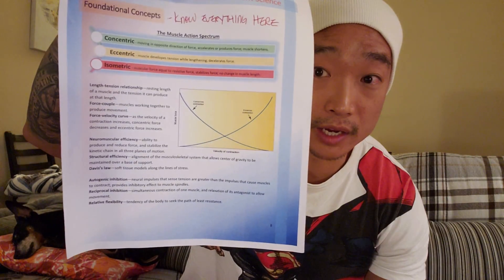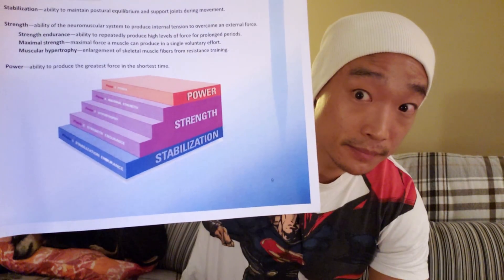Page eight covers fundamental concepts — you should know everything here. Concentric, eccentric, and isometric muscle movements are very important and apply to practically the entire book. Commit to memory and understand everything on page eight. Page nine is where they introduce the OPT model, which is the bread and butter of the NASM program, so obviously know that.